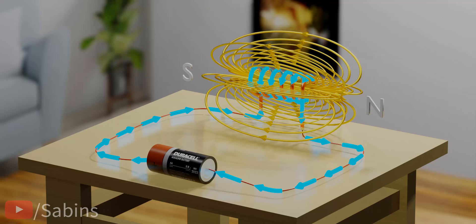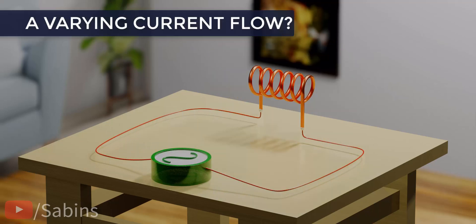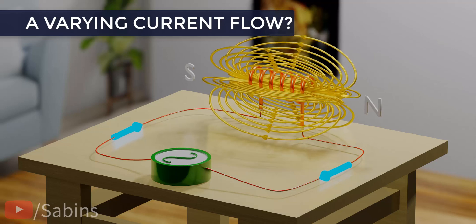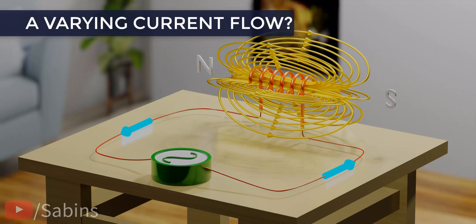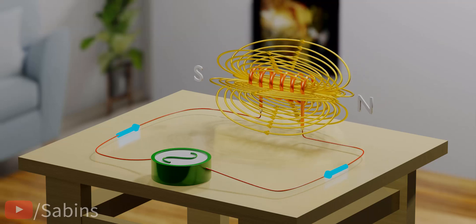Now, for the most important part of this video. What will happen if the current through the coil changes? When the current changes, the magnetic flux that the coil produces also changes, which means we need to study the effect of this varying magnetic flux on the coil.